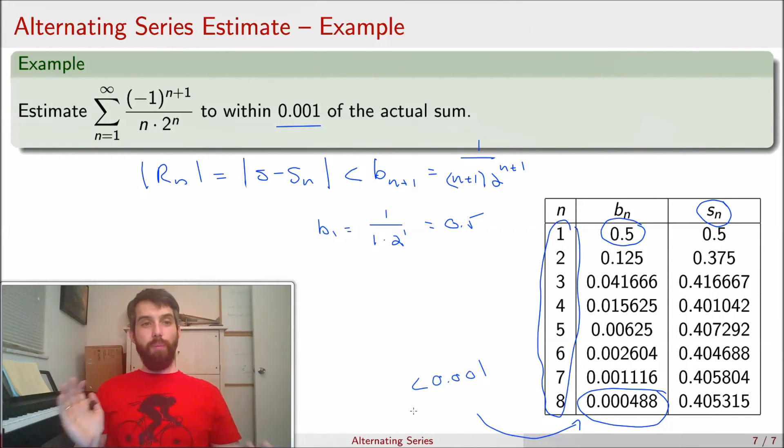However, we remember that if I'm looking at my remainder, it's less than bn plus 1. So if it's b8, that's my value here, b8, that's less than 0.01. The n in that case is not going to be 8. It's going to be 7. It's going to be 1 less than it.